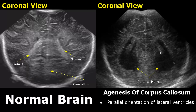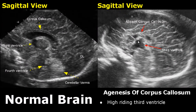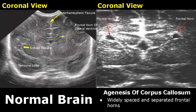In agenesis of corpus callosum, we will see parallel orientation of the lateral ventricles — the ventricles are in a straight line and parallel to each other. They are also enlarged. In this sagittal view we can see that the corpus callosum is absent. A high-riding third ventricle is also present, higher than its usual location. Another feature is the widely spaced and separated frontal horns.